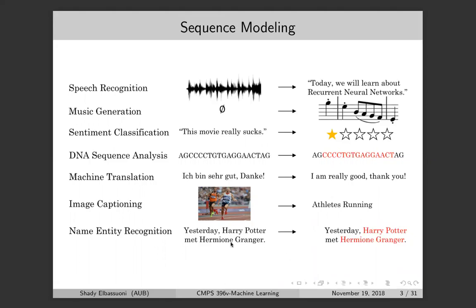In named entity recognition, the input is variable-length text — for example, 'Yesterday Harry Potter met Hermione Granger' — and the output is also variable-length tags over the input sequence. These are the scenarios where you start thinking about recurrent neural networks.